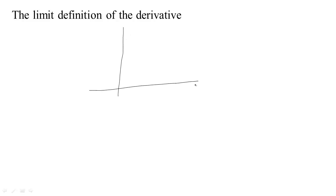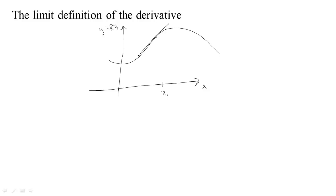In Calc 1, we were looking at functions that had one input and one output. We could look at the graph — maybe this axis is our input and this axis represents y, or the output f of x. We have a function, and at some point we wanted to find the slope of that location. Let me call this point x-naught. We wanted to find the slope of the tangent line.